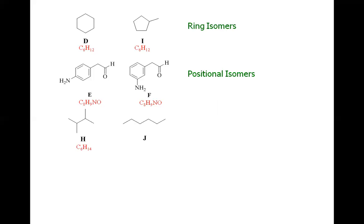For the pair H and J: their molecular formulas both match as C6H14, confirming they are isomers. Compound J has a six-carbon chain, while compound H has a four-carbon chain with two methyl groups attached. Since there is a difference in the length of the carbon chain, they are called chain isomers.